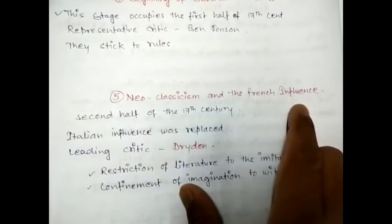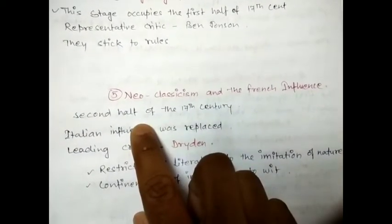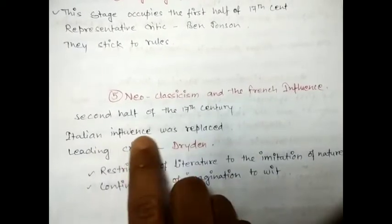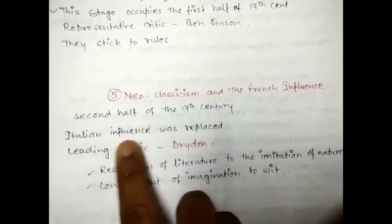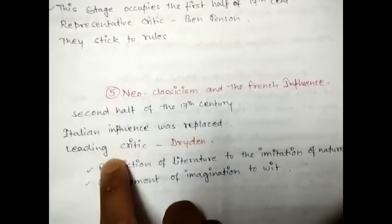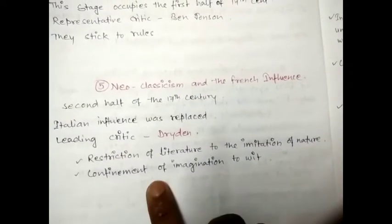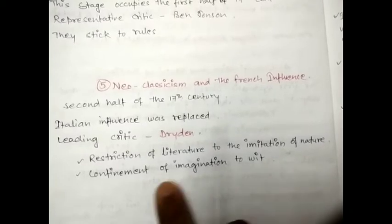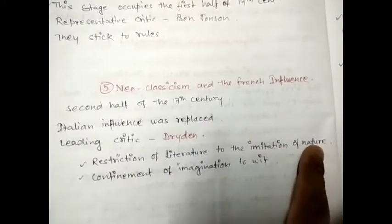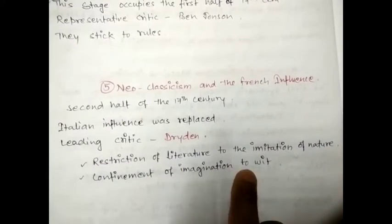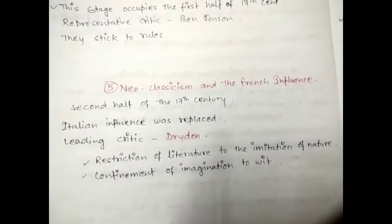The fifth phase was Neoclassicism and the French influence, covering the second half of the 17th century. The Italian influence was replaced by French influence, and Dryden was the leading critic. Two things were important: restriction of literature to imitation of nature, and confinement of imagination to wit.